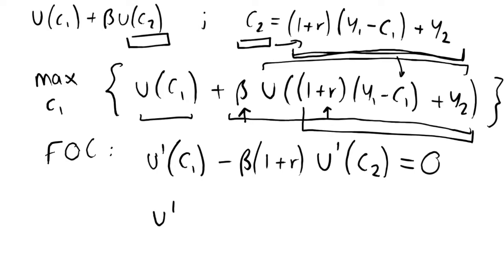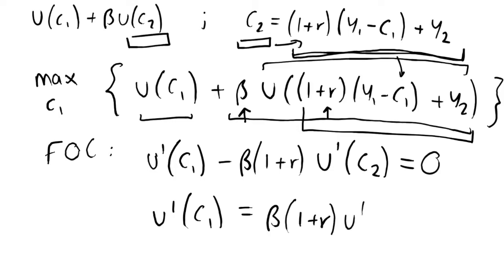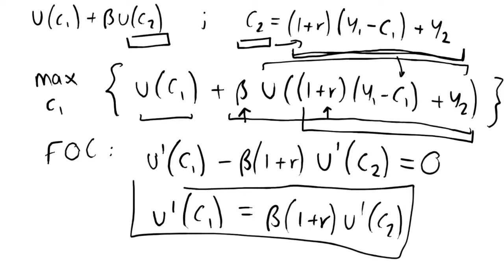Setting equal to zero and rearranging, we get: u′(c1) = β(1 + r) · u′(c2). This equation is what we call the Euler equation — sometimes pronounced 'Oiler' equation, though the correct pronunciation is 'Euler equation.'